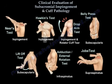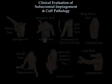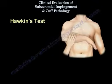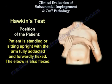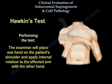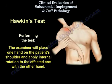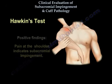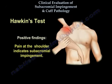The Hawkins test. Position the patient standing or sitting upright with the arm fully adducted and forwardly flexed. The elbow is also flexed. The examiner will place one hand on the patient's shoulder and apply internal rotation to the affected arm with the other hand. Pain at the shoulder indicates subacromial impingement.